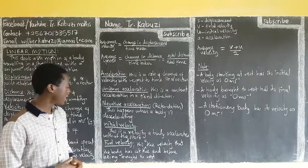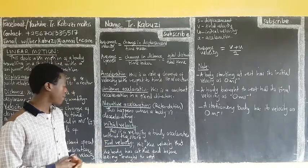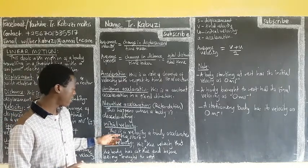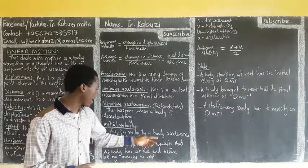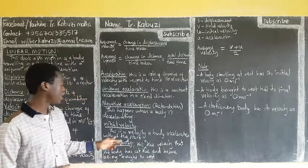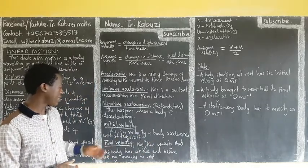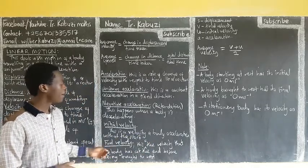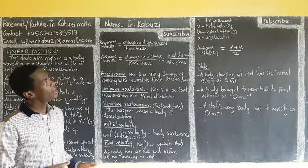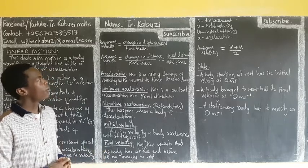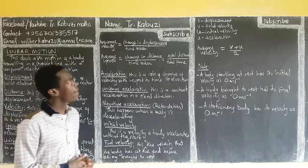Initial velocity is the velocity of the body at the start — when the body begins to accelerate. Final velocity is the velocity the body has at the end, when it has finished accelerating.